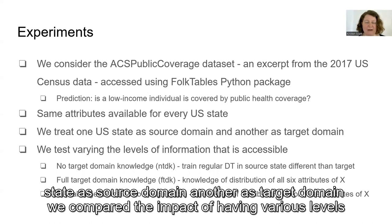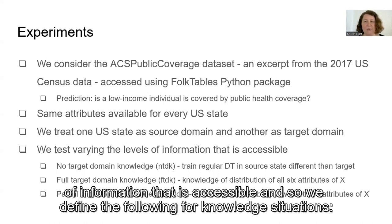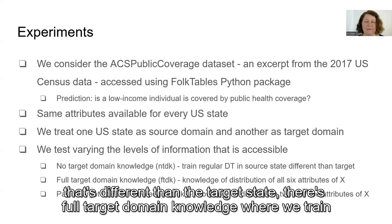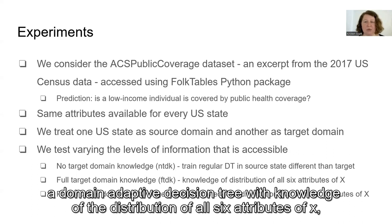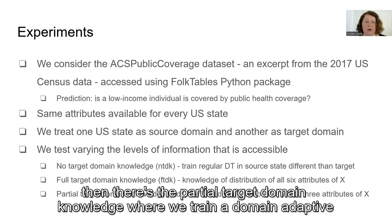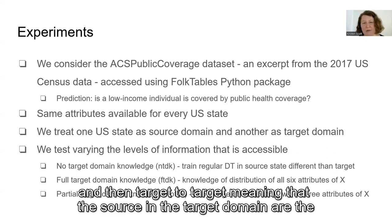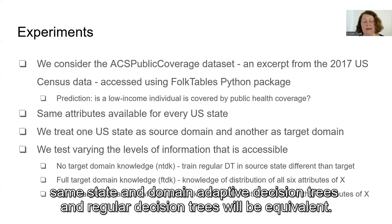We compared the impact of having various levels of accessible information, defining four knowledge situations. First, no-target domain knowledge: training a regular decision tree in a source state different from the target state. Second, full-target domain knowledge: training a domain adaptive decision tree with knowledge of the distribution of all six attributes of X. Third, partial-target domain knowledge: training with knowledge of the distribution of just two or three attributes. Fourth, target-to-target: the source and target domain are the same state, where domain adaptive and regular decision trees are equivalent.